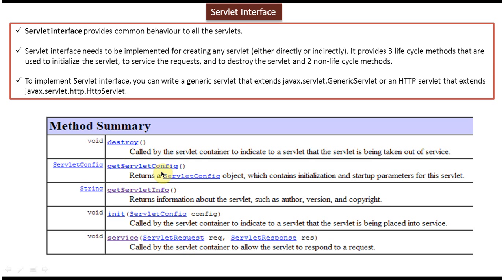The getServletInfo method is used to return information about the Servlet like author, version, and copyright. The getServletConfig method will return the ServletConfig object which contains initialization and startup parameters for the particular Servlet.